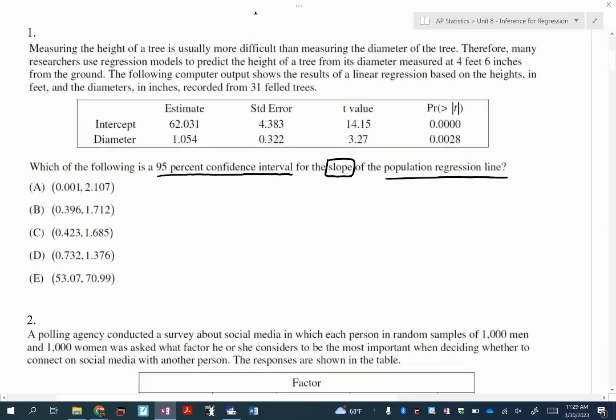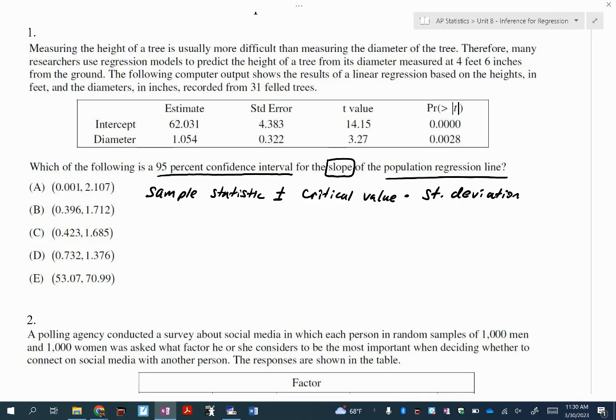Number one was asking us to find a 95% confidence interval for the slope of the population regression line. So does anybody remember the very generic way to write out a confidence interval? Statistic plus or minus critical value times excellent, and we're going to write standard deviation, but you probably know at this point in your stats career that 99% of the time it's going to be standard error.